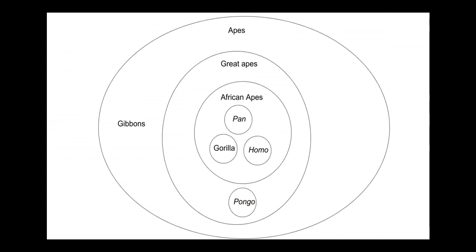We can also use circle diagrams to represent how all of these groups relate to one another. But this again takes a fair bit of space to draw out, so we'll use Newick notation as a way of making this information more compact.